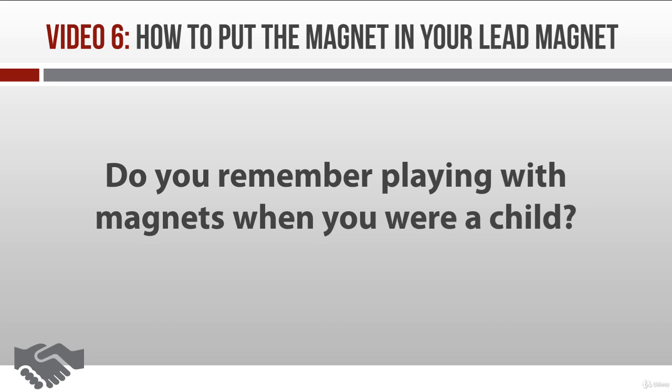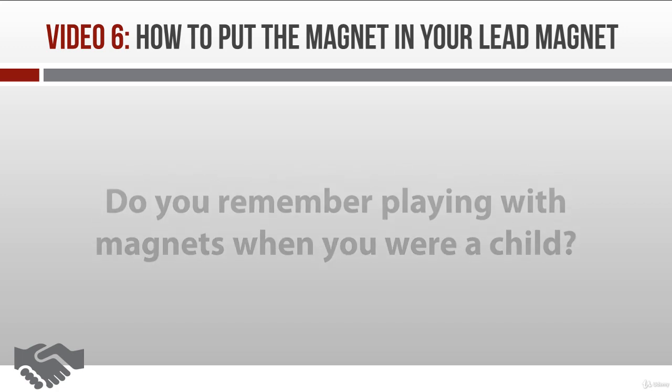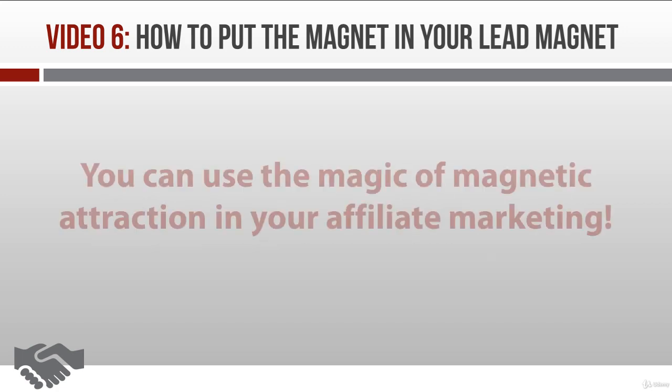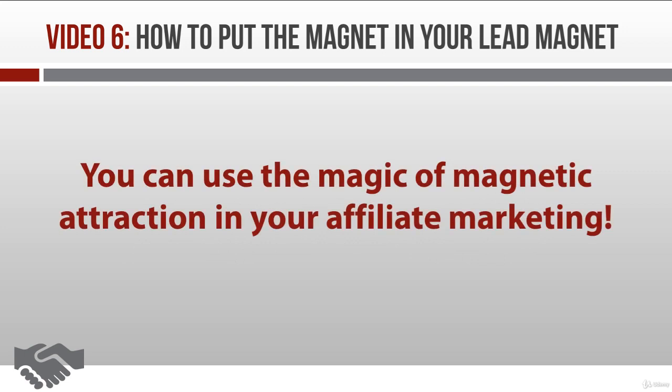To me, it seemed like magic. The cool thing is that you can use this sort of magic in your affiliate marketing. You can create a lead product that attracts your prospects to you with the same white-hot intensity of two opposite magnets. This is called a lead magnet product.